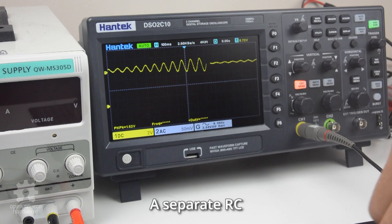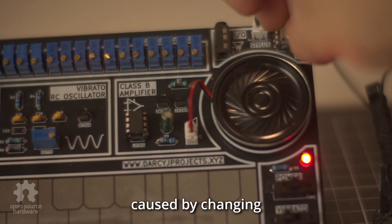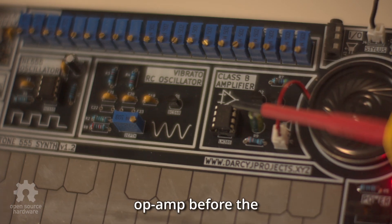A separate RC oscillator modulates the 555's control voltage for a vibrato effect. To prevent instability caused by changing output impedance when adjusting the volume, the audio signal is buffered by an LM386 op-amp before the push-pull amplifier.